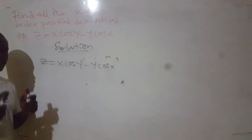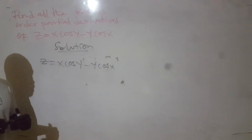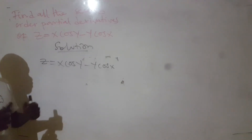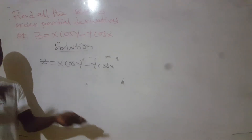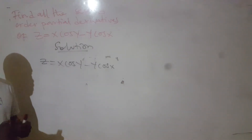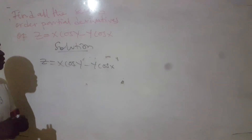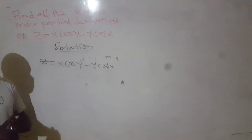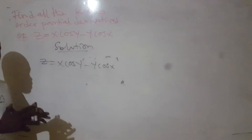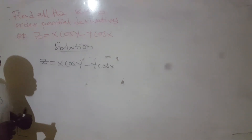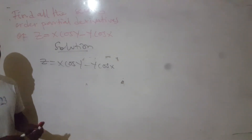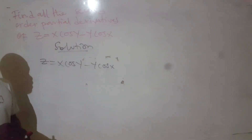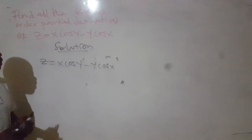What we do is that we first differentiate with respect to x. The function that we differentiated with respect to x, we differentiate again with respect to x and y. Those would be the first two second-order partial derivatives. Now we go and differentiate with respect to y, and that result we differentiate with respect to y again, and then with respect to x and y. Then we are done. For second-order partial derivatives, we always get four results. So let's do that.